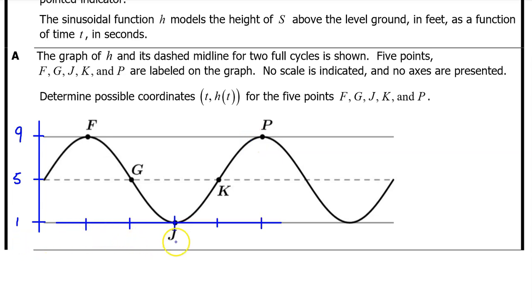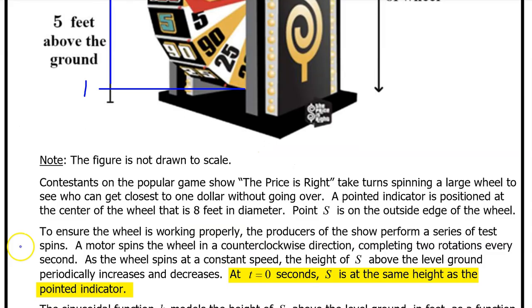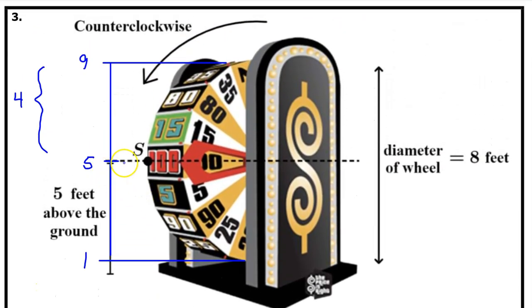Now let's find the input value coordinates. At t equals zero seconds, S is at the same height as the pointed indicator. So at t equals zero seconds, S is at a height of five feet. S is at the midline.